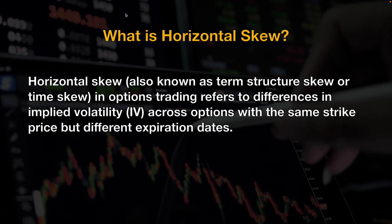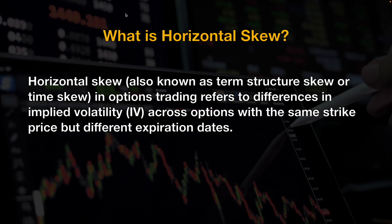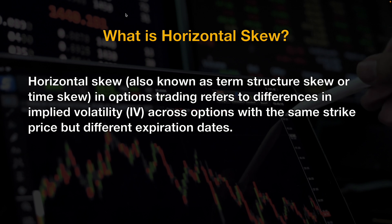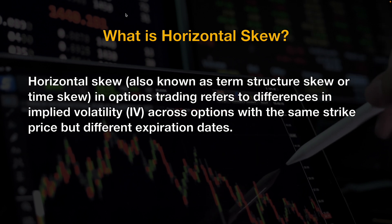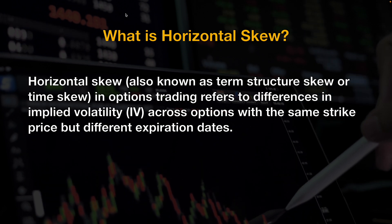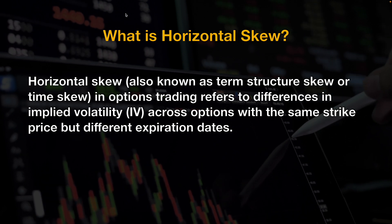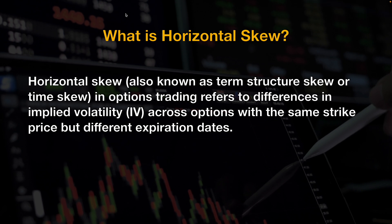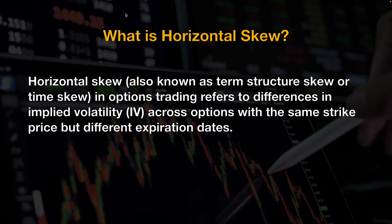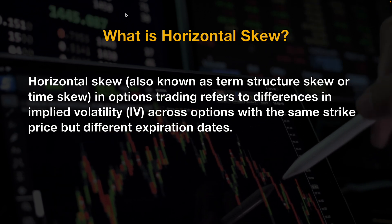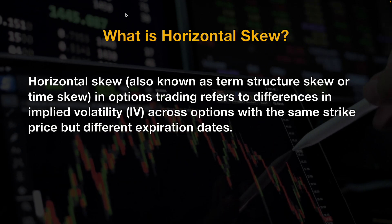So first, let's talk about what horizontal skew is. Horizontal skew, also known as term structure skew or time skew in options trading, refers to differences in implied volatility across options with the same strike price but different expiration dates.